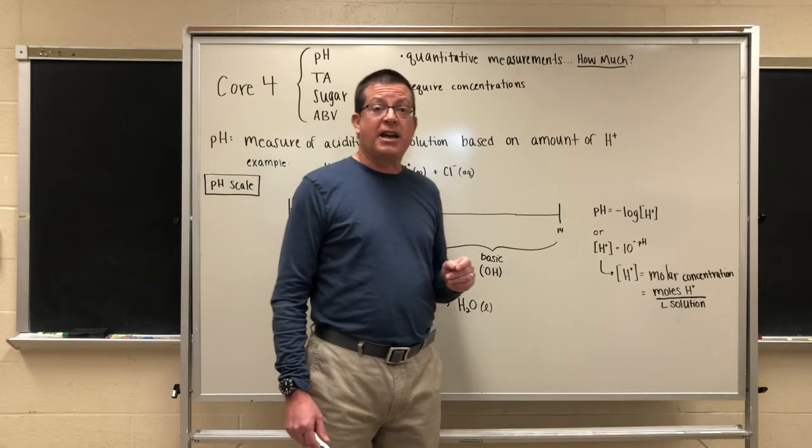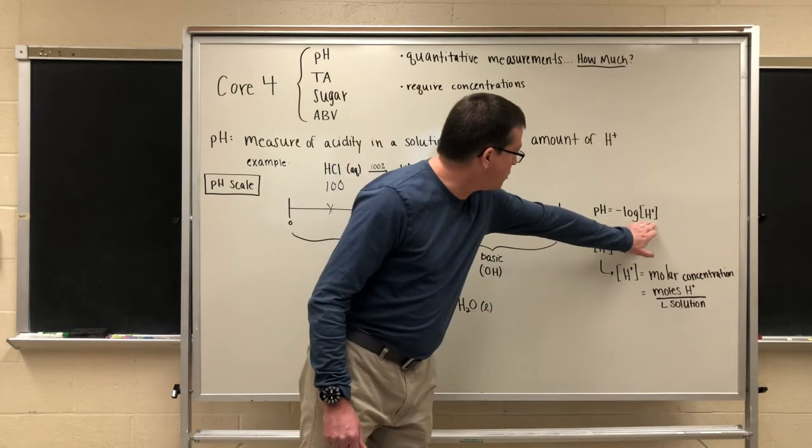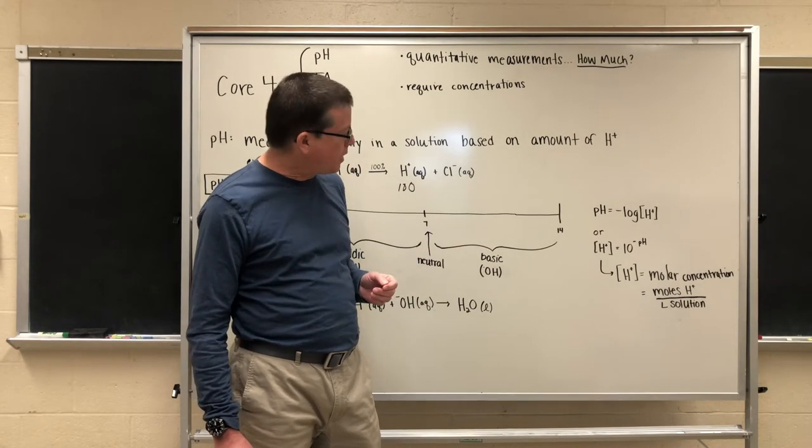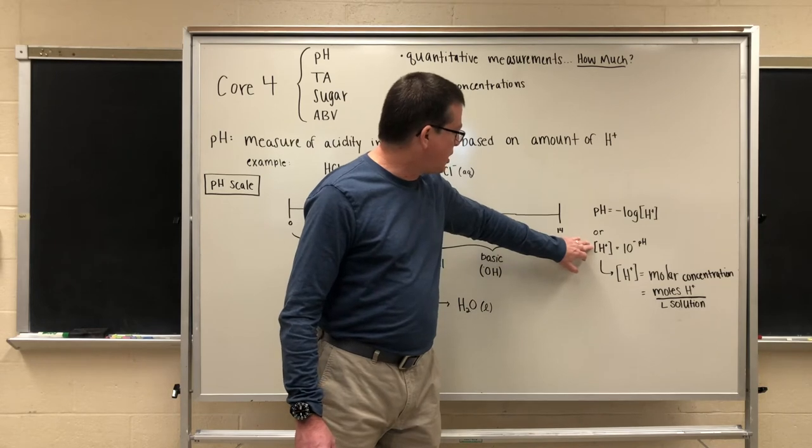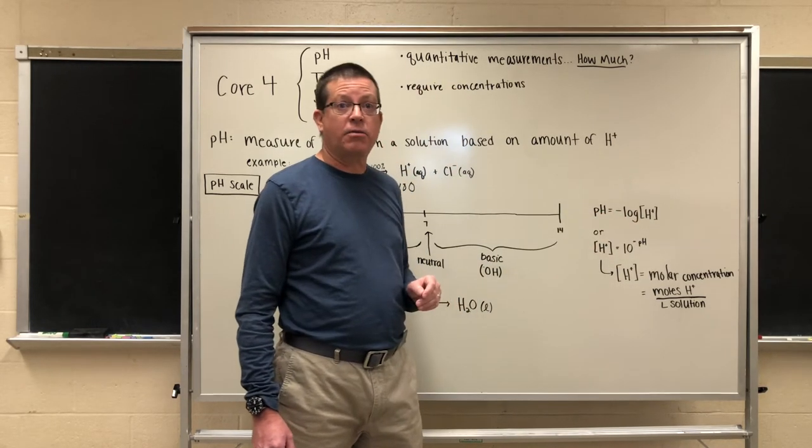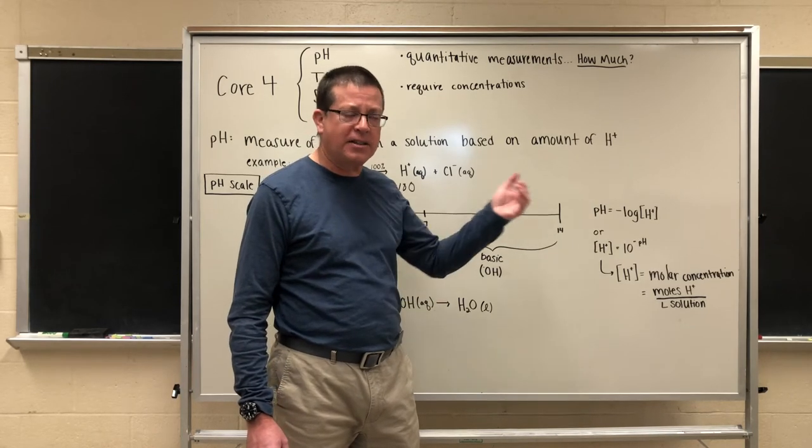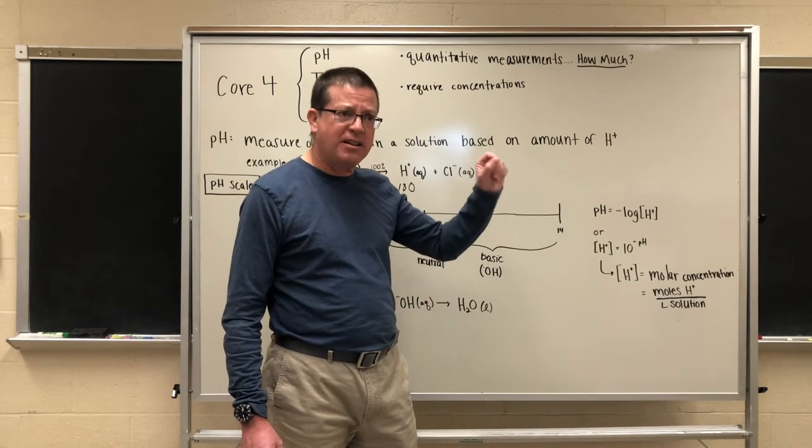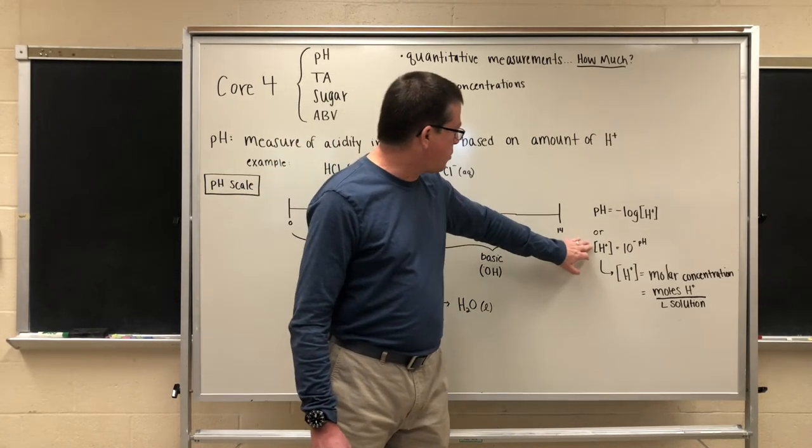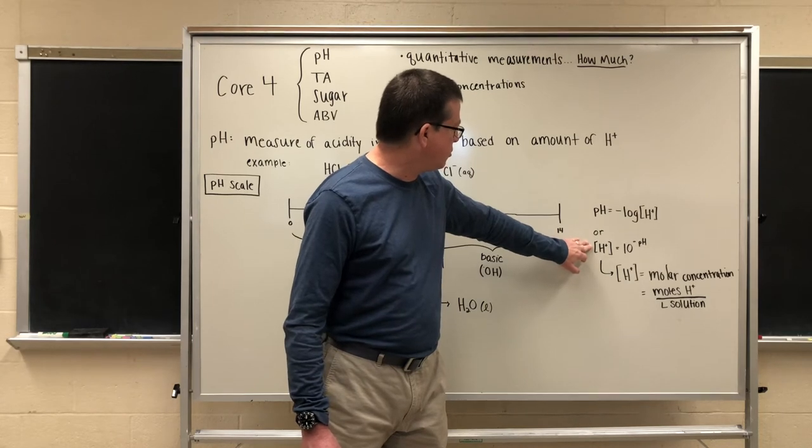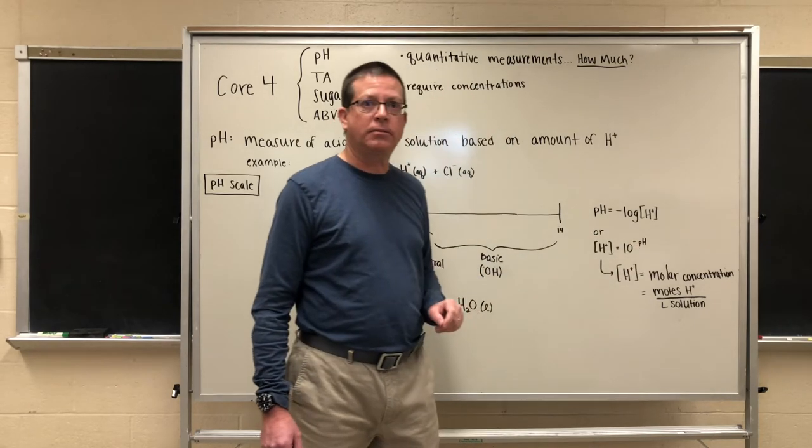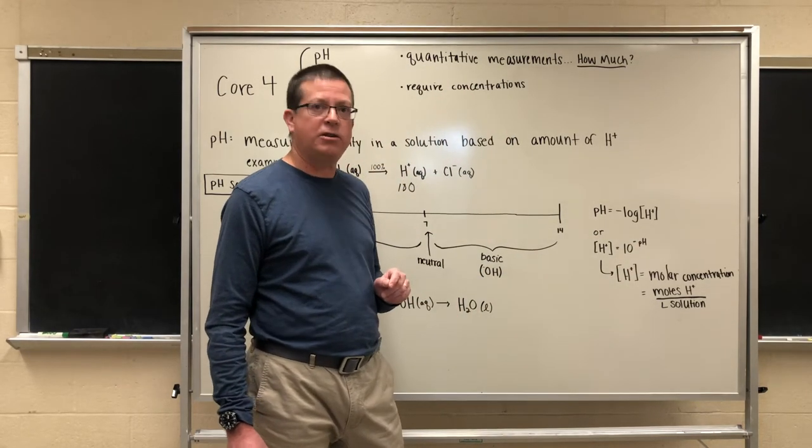In order to get back to the actual concentration which is what we're interested in we have to rearrange and manipulate this equation. We ultimately have to solve for the hydrogen ion concentration by undoing the negative base 10 logarithm and we can do that with the inverse key on the calculator which is the 10 to the x key, the exponential key on your calculator. So ultimately if we want to get back to the hydrogen ion concentration in solution we do it by taking 10 to the minus pH power. That's a simple manipulation we can do on our calculator.